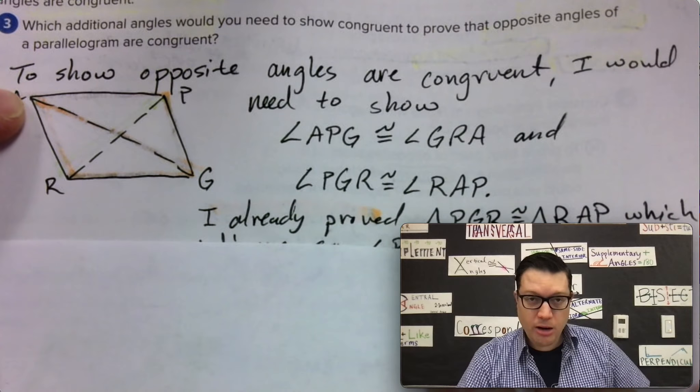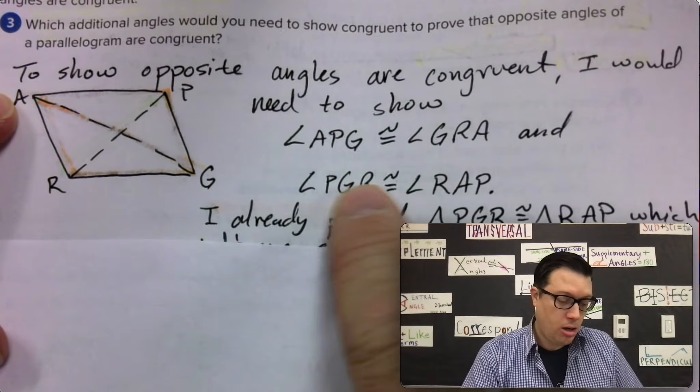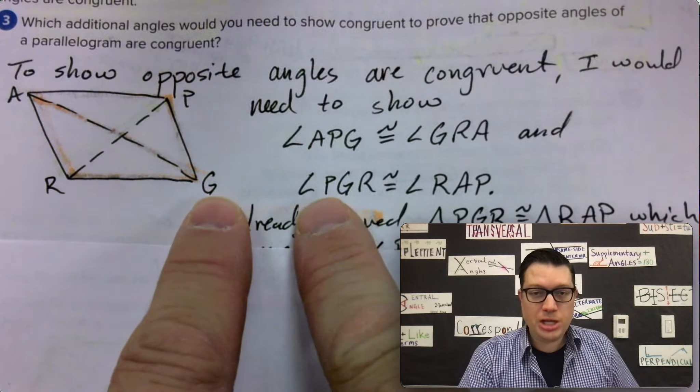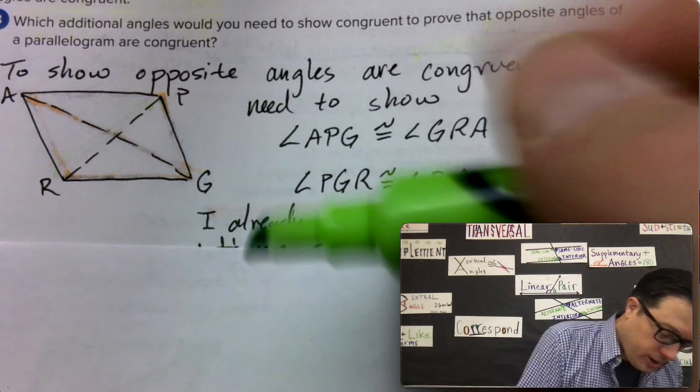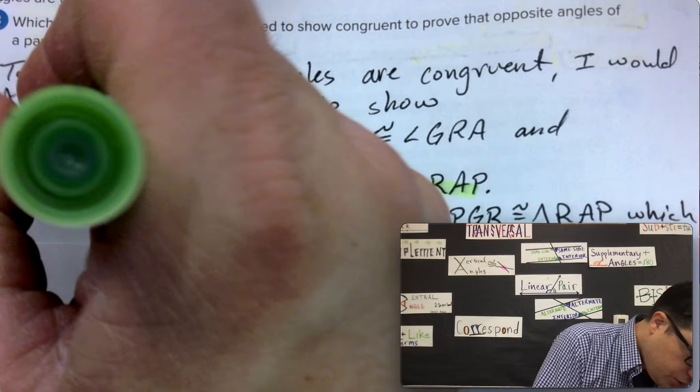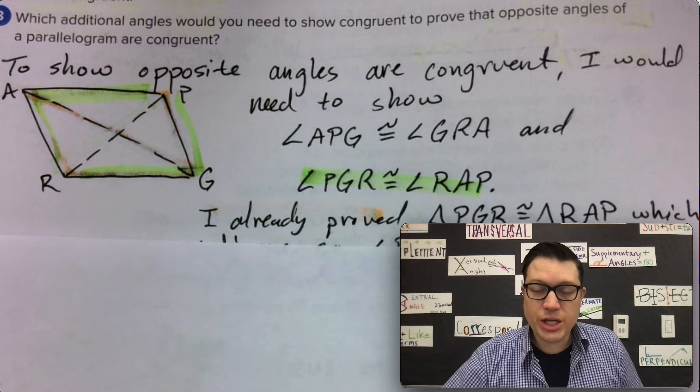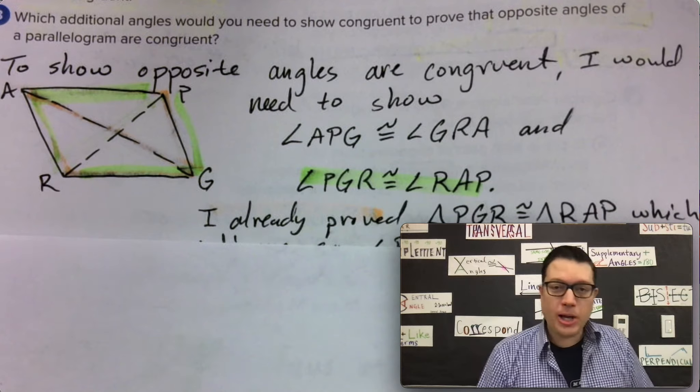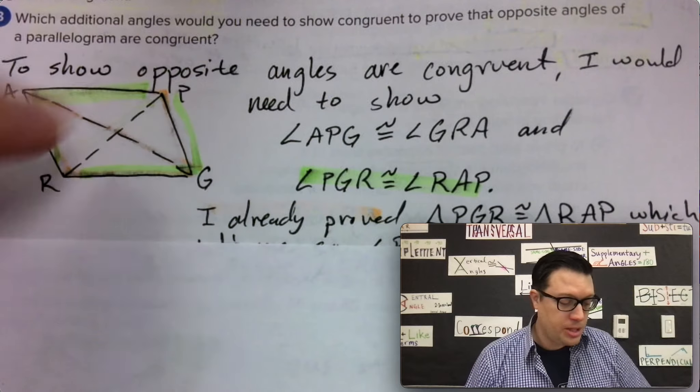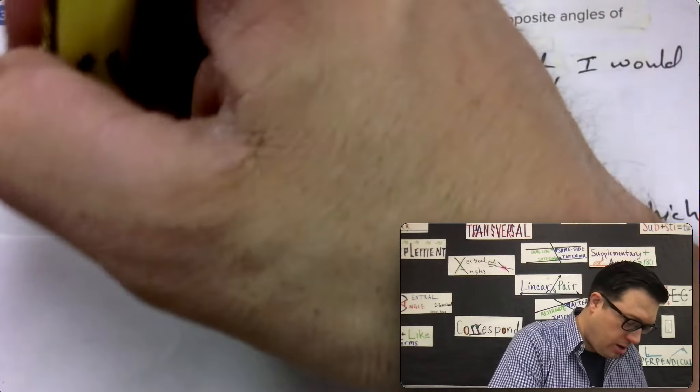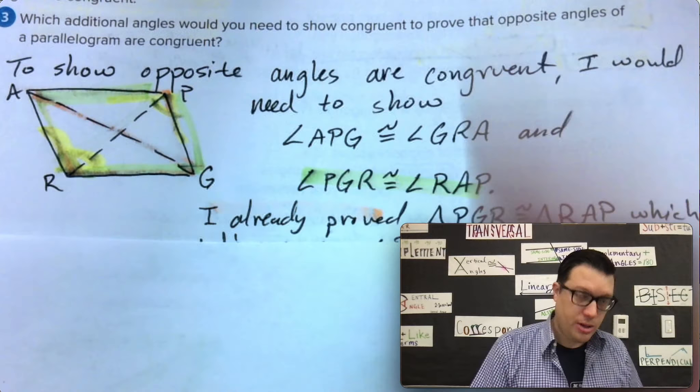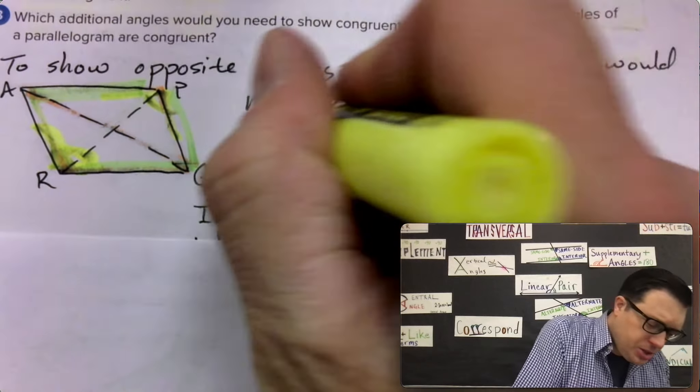The angle here, angle A, known by RAP, and angle G, known as PGR. Those two angles are congruent. And in order to show that there's some conditions that need to be met. The other two angles that are related are the opposite angles, APG, so highlight APG, and also GRA. So those are the two angles.